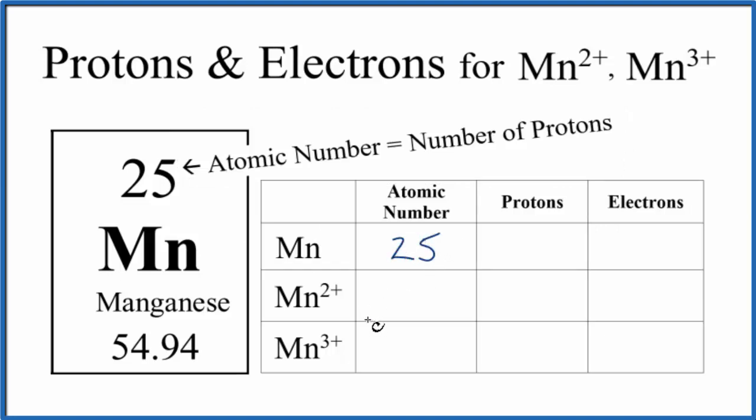And that's going to be the same for each ion here. So if it's Mn, if you see Mn, the atomic number is always going to be 25. And the atomic number equals the number of protons. So we have 25 protons for each of these here.